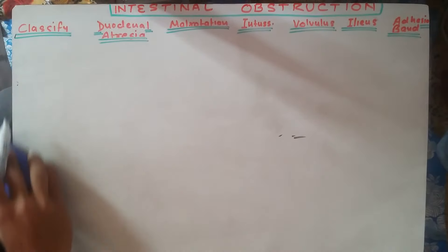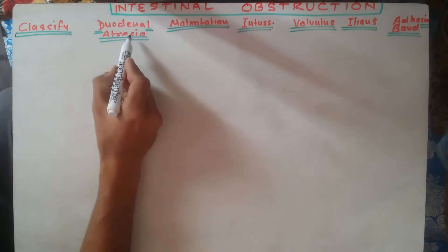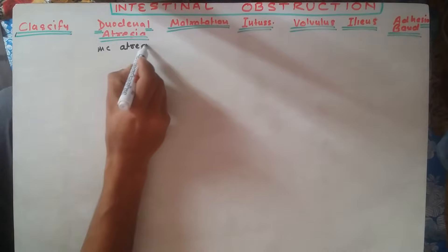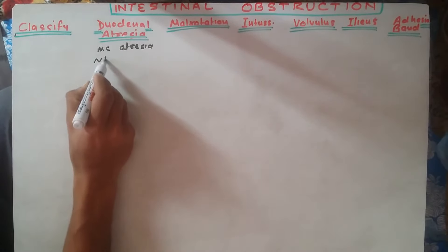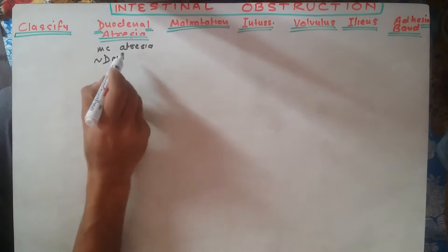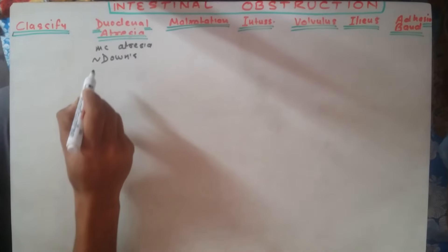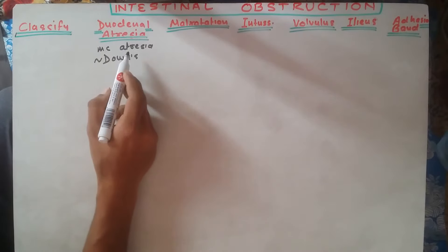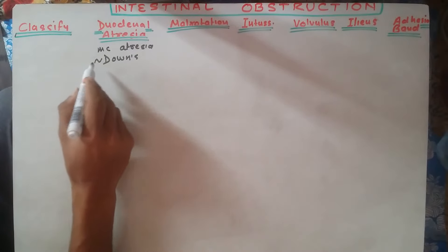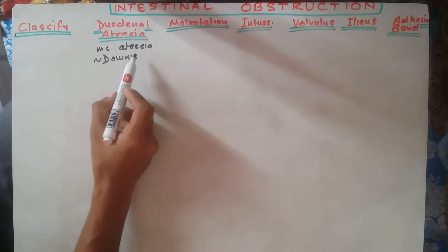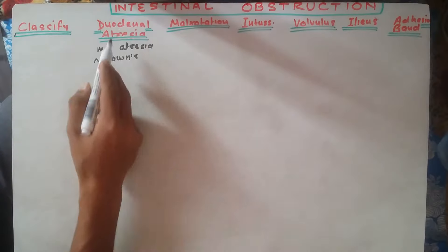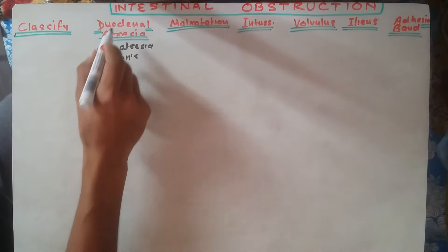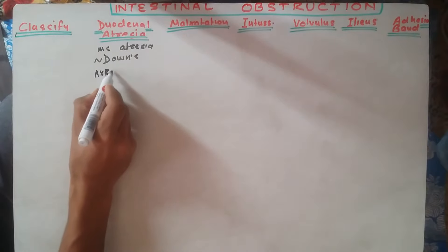Duodenal atresia is the most common type of atresia in the intestine. It is most commonly associated with Down syndrome in the GIT. As the name suggests, there is atresia — stenosis of the duodenal part — resulting in obstruction. The important question usually asked about duodenal atresia is its appearance on abdominal X-ray, which shows a double bubble sign.